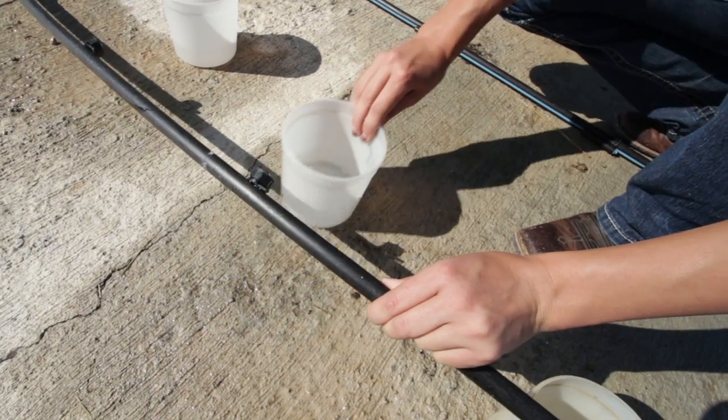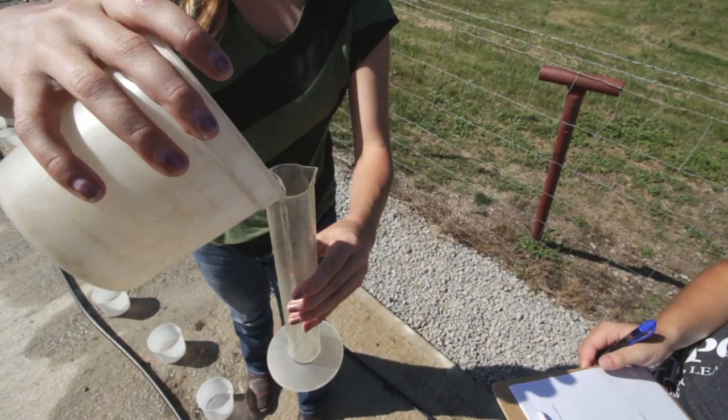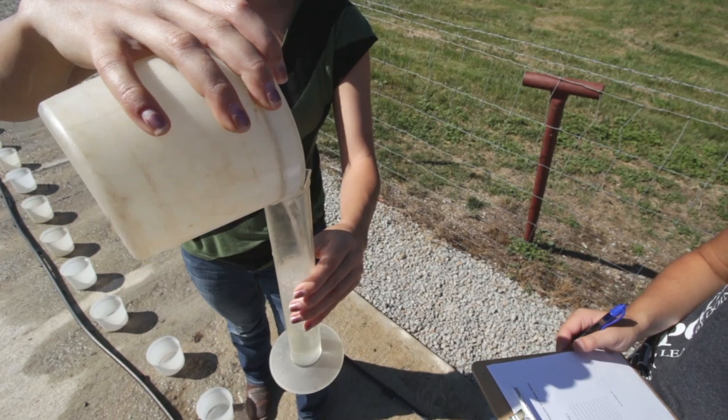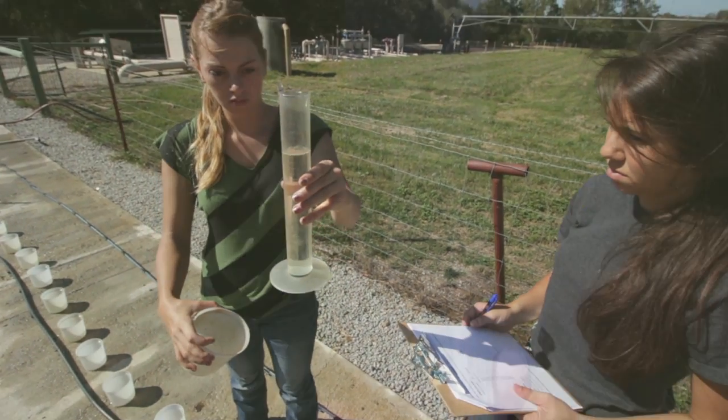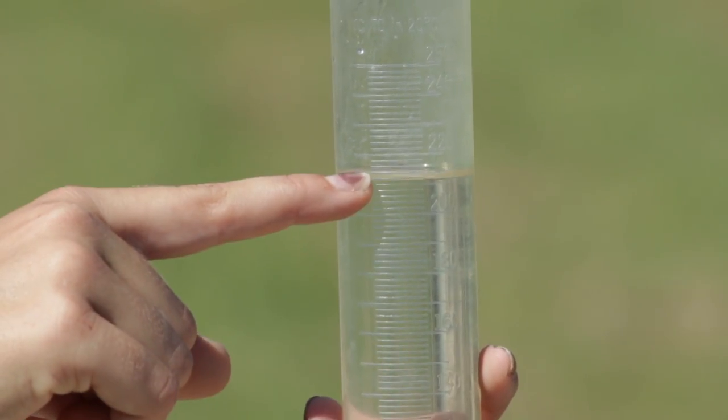After carefully removing all the cans, use a graduated cylinder to accurately measure and record the volume of water collected in each can. The reading should be taken from the bottom of the meniscus in the graduated cylinder.